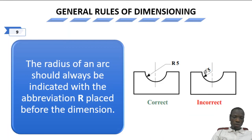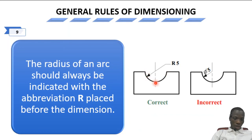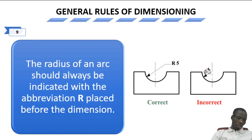Rule 9: the radius of an arc should always be indicated with the abbreviation R, placed before the dimension value. For an arc, you have an arrow line with the extension, and you write R5 — telling us this is an arc with radius 5 units. You cannot use the diameter symbol φ for an arc; it is not a circle, so using φ here is incorrect. The abbreviation R before the numerical value is the appropriate way.